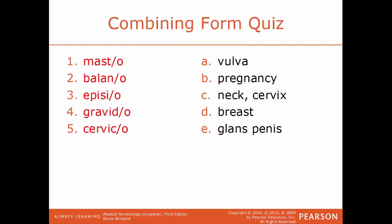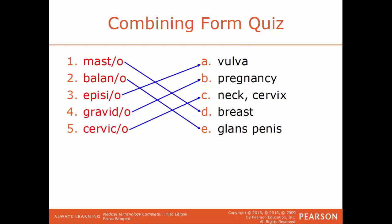We will finish this chapter with our combining form quiz. Terms on the left — masto, balano, episio, gravido, cervico — match up to the terms on the right. Masto goes to breast. Balano goes to glans penis. Episio goes to vulva. Gravido goes to pregnancy. Cervico goes to neck or cervix. Here are all five terms correctly matched to the definition. That brings us to the end of this chapter — one of the longer chapters in this video series. We will continue with the next video on chapter 13.